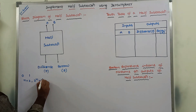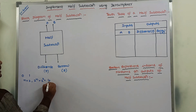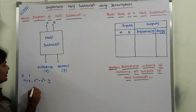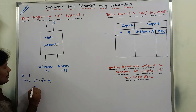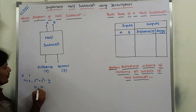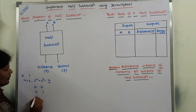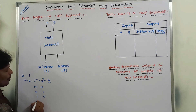That is equal to 2 power 2, which is 4 possible input combinations: 0,0 then 0,1 then 1,0 and 1,1.